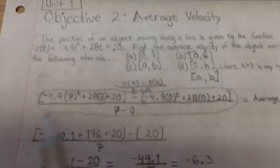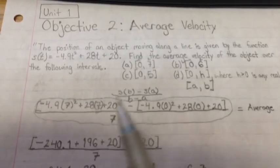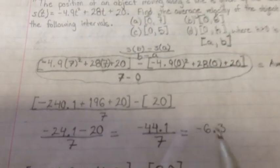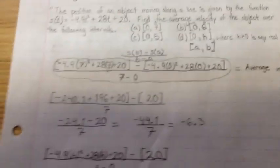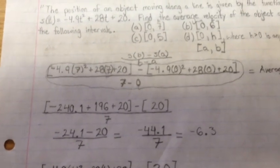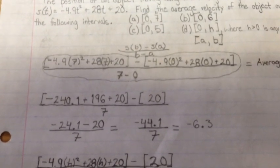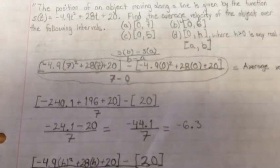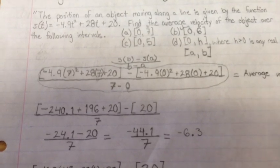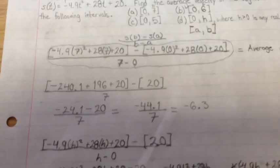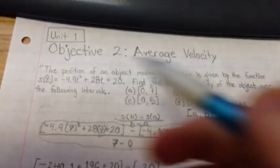But this right here, this is very long and just painstaking to try to fill it all out. I went ahead and solved it all, and what you end up with for the interval [0, 7] is an answer of -6.3. The average velocity being -6.3, and you could put that as feet per second or whatever, depending on what it said.